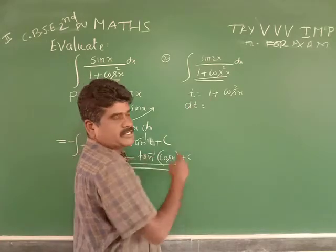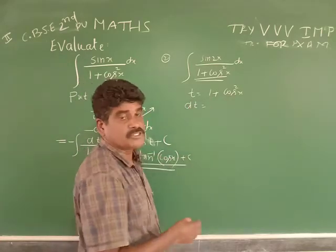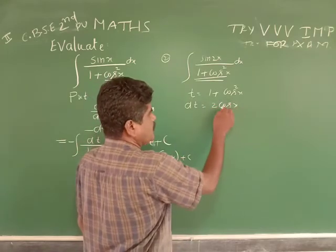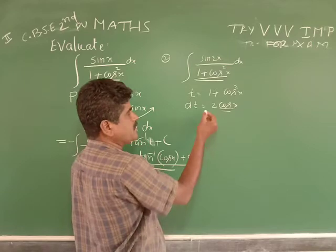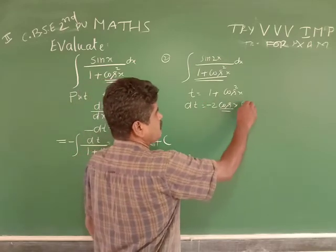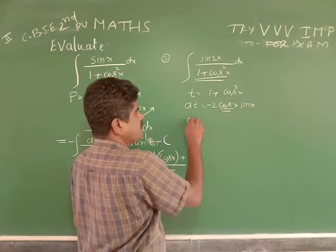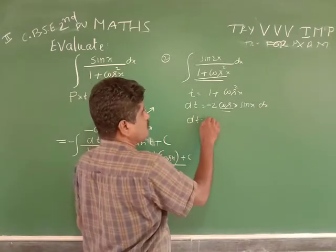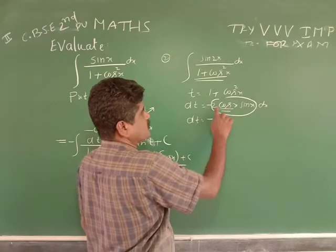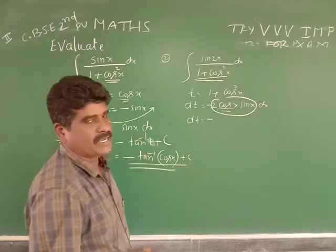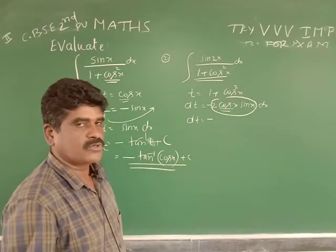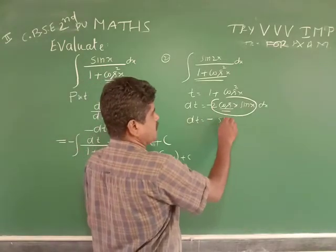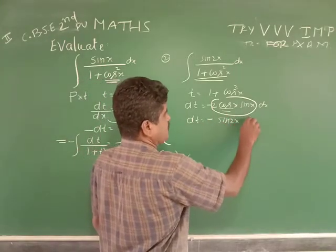dt equals 0 plus 2cos(x) by chain rule: 2cos(x) into the derivative of cos(x), which is minus sin(x), into dx. So dt equals minus 2sin(x)cos(x) dx. Using the multiple angle formula, sin(2A) equals 2sin(A)cos(A), this becomes dt equal to minus sin(2x) dx.